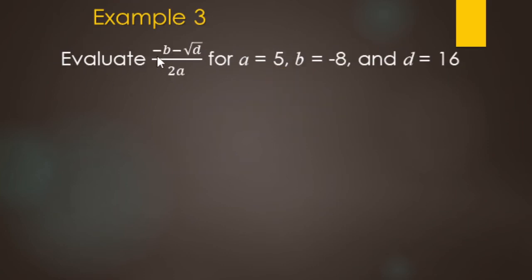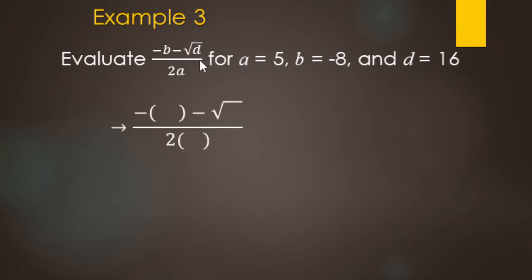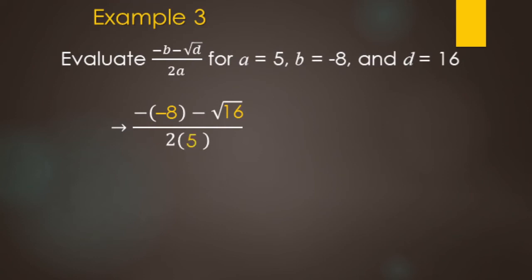We're going to evaluate negative B minus square root of D, all over 2A, for when A equals 5, B equals negative 8, and D equals 16. We replace the variables: negative B becomes negative negative 8, minus square root of D becomes minus square root of 16, and 2A becomes 2 times 5. The fraction bar is a grouping symbol, so we simplify the numerator and denominator first, then do the division step. These parentheses are multiplication parentheses, not grouping symbols.